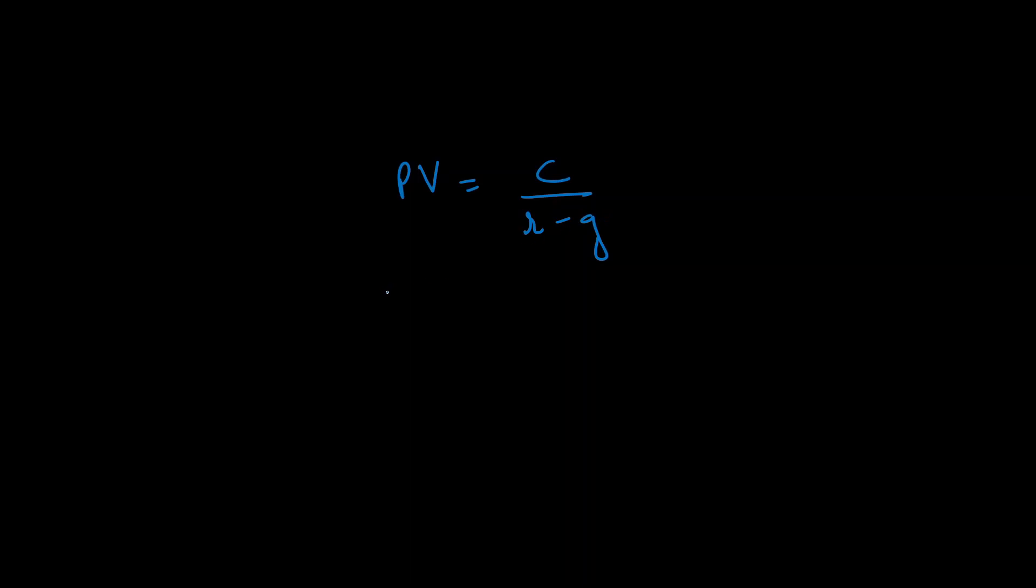There are a couple of things you need to keep in mind about this formula. Number one, the c is the cash flow that you're getting after one period, not at date zero. Always keep that in mind—if you're getting a cash flow in period zero, don't mix it up with this formula.